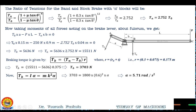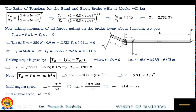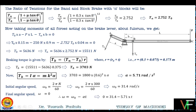Finally, we calculate the time taken by the system to become stationary. Initial angular speed omega_0 = 2·pi·n / 60 = 2·pi × 300 / 60 = 31.4 rad/s. Final angular speed omega = 0. Using omega = omega_0 - alpha·t: 0 = 31.4 - 5.71 × t, giving t = 5.5 seconds.